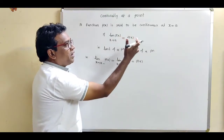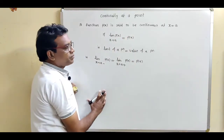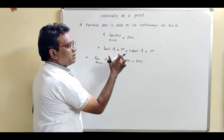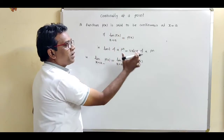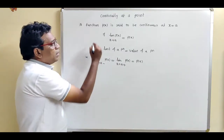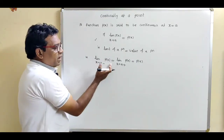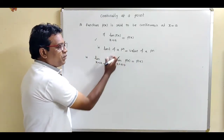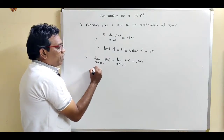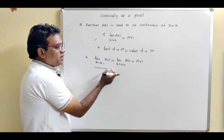Continuity depends upon two terms: one is the limit of the function and the second is the value of the function. If the limit of function and value of function are both equal, then the function is said to be a continuous function; otherwise it is said to be a discontinuous function. The same definition can be written as: if the limit from left is equal to the limit from right, which is equal to the value of the function.